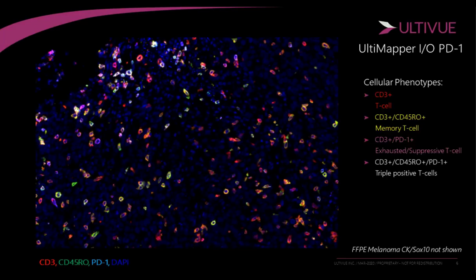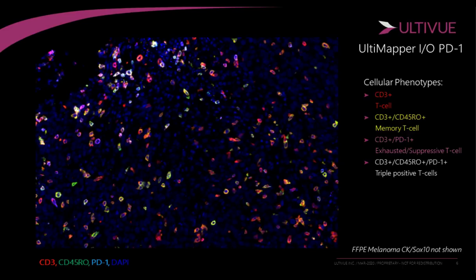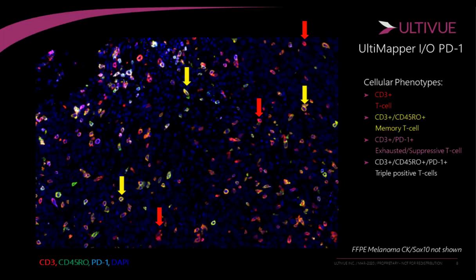To highlight some of the technology advantages that UltiView presents, we're showing a melanoma stained with our PD-1 kit, which has CD3 in red, CD45 RO in green, and PD-1 in light blue cyan. We've dropped off the tumor marker in this case for clarity. I'm hoping you can visualize the co-localizations of some of these markers, as well as see indications of dynamic range. What I'm highlighting here are some single positive CD3-positive T cells.